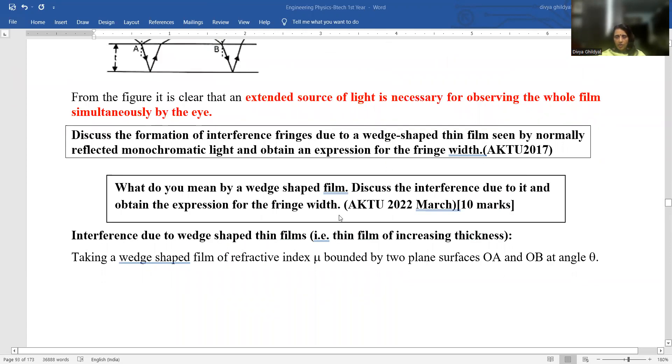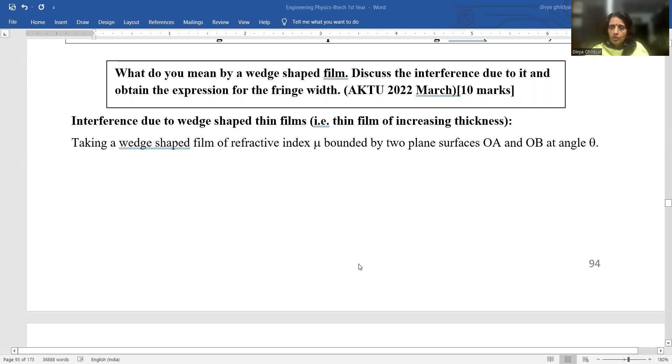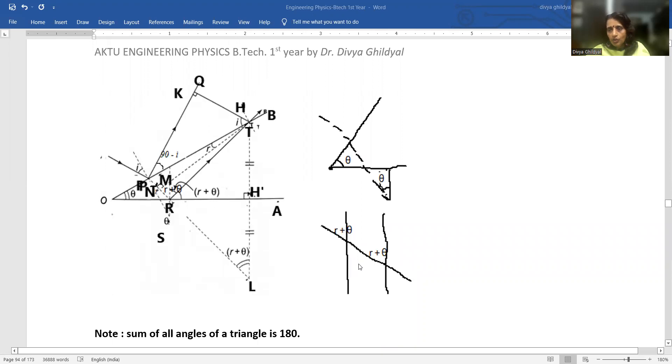Now look, you can get an idea how many times this has been asked. It is basically a section C question where you have to derive an expression for path difference due to wedge-shaped thin film or discuss the formation of interference fringes. This is a 10 mark question. 4 to 5 marks will go for your ray diagram and the rest for your derivation of path difference expression. So let us begin.